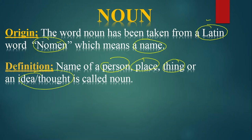An idea and thought is all about imagination, feelings, and observation — that is called noun. So the word noun has been derived from the Latin word nomen, which means name. The definition of noun is: name of a person, place, thing, or idea/thought is called noun. Now we will look at examples, starting with the name of a person.